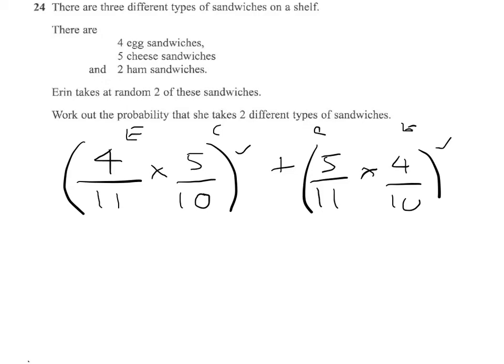So for egg and cheese, we're going to have twenty over, not two ten, rather one ten. So it would be twenty over one ten plus twenty over one ten. So all together, that combination is going to be forty over one ten.